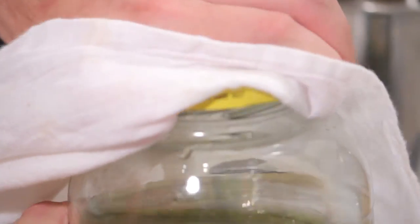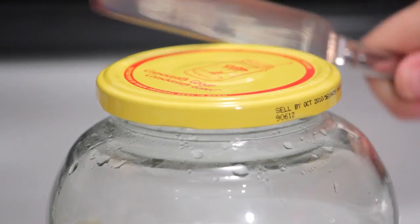If this doesn't work, use the smooth edge of a butter knife and begin tapping the lid of the jar. Tap the lid hard enough so that you see little dents.